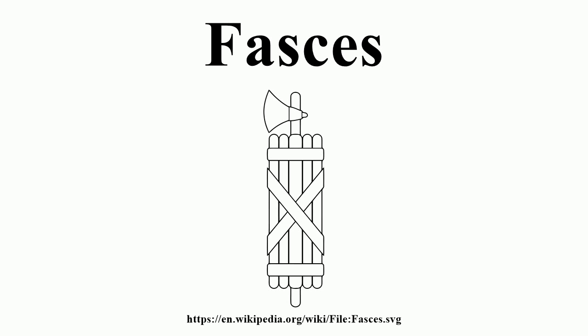Italian fascism, which derives its name from the Fassus, arguably used this symbolism the most in the 20th century. The British Union of Fascists also used it in the 1930s. The Fassus, as a widespread and long-established symbol in the West, however, has avoided the stigma associated with much of fascist symbolism, and many authorities continue to display them, including the federal government of the United States.